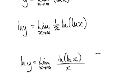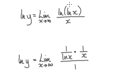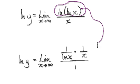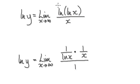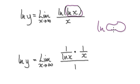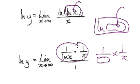So you've got infinity over infinity — an indeterminate form — so you can use L'Hôpital's rule and differentiate. If you differentiate the numerator, it gives you this. When you differentiate the natural log of a bubble, it's 1 over the bubble, times the derivative of the bubble itself, which is 1 over x.